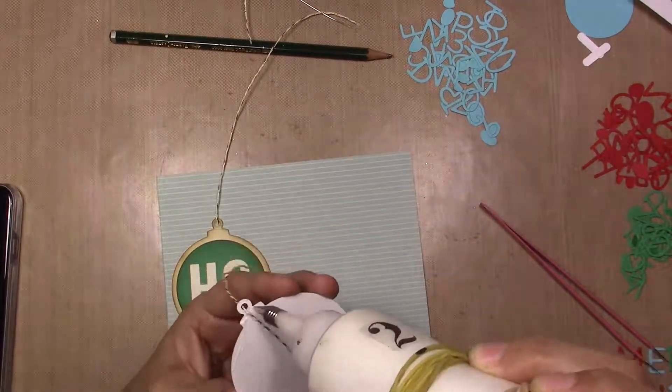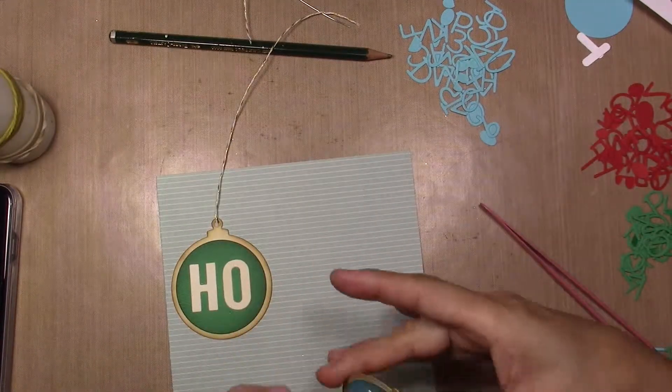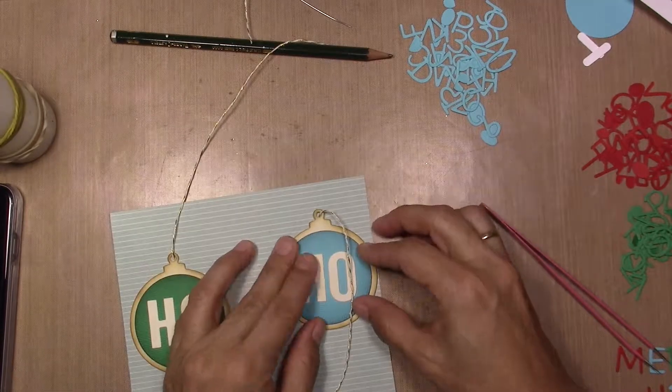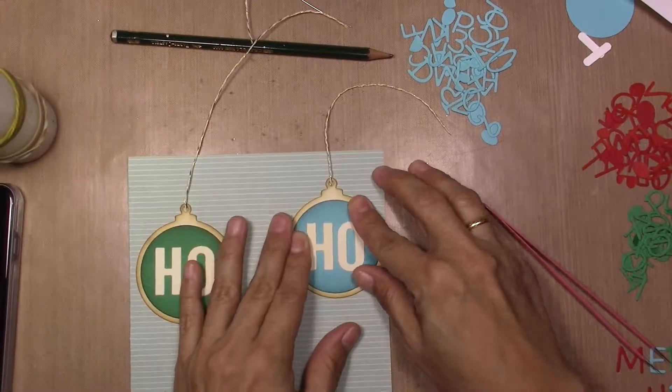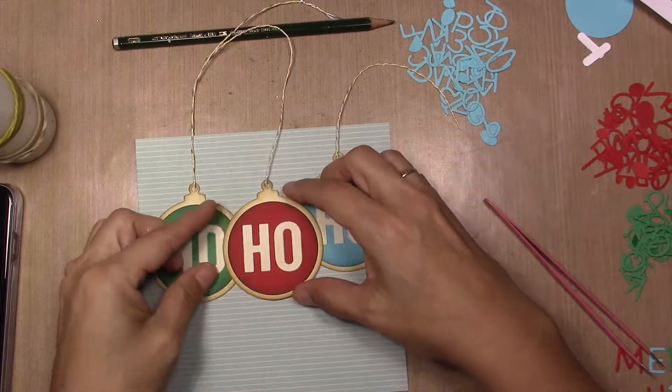I'm going to glue the red one in the middle and attach it to the panel with foam tape. The foam tape that I'm using is not that thick so I don't have a lot of dimension but I have a little bit.